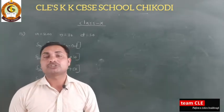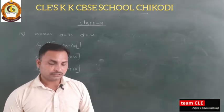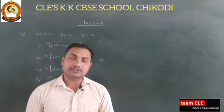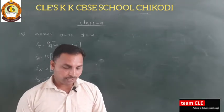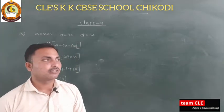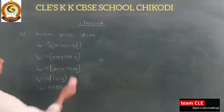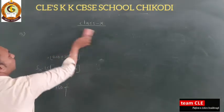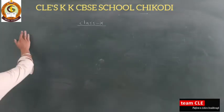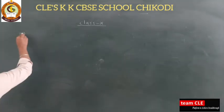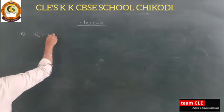If each prize is ₹20 less than its preceding prize, find the value of each of the prizes. We are given: Sₙ = ₹700 total, n = 7 cash prizes. Since we don't know the value of each prize, let the first (largest) prize = ₹x.